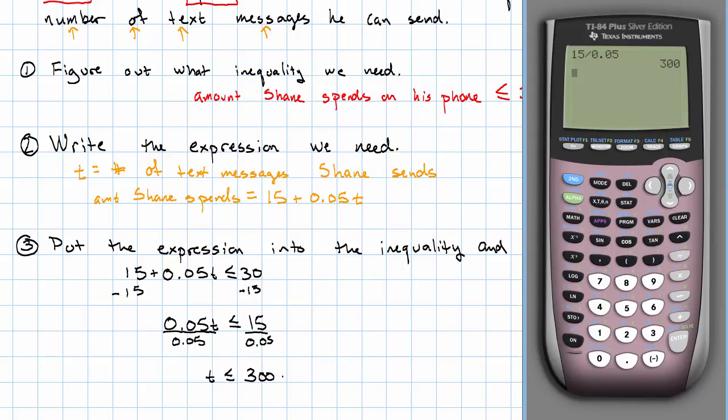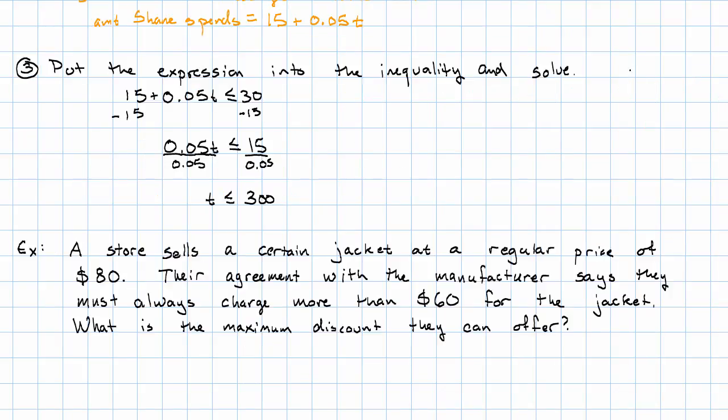Let's see another example. Suppose a store sells a certain jacket at a regular price of $80. Their agreement with the manufacturer says they must always charge more than $60 for the jacket. What's the maximum discount that they can offer?